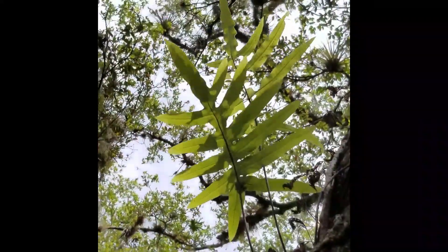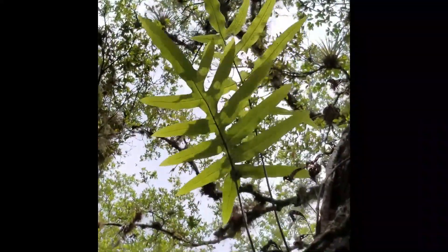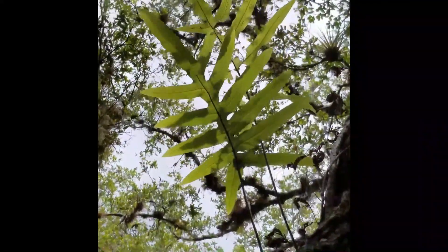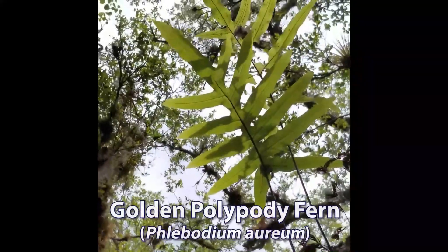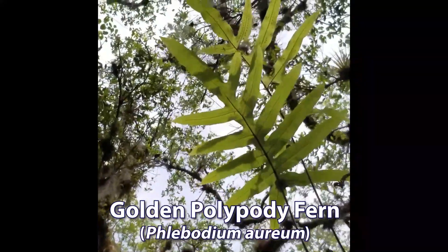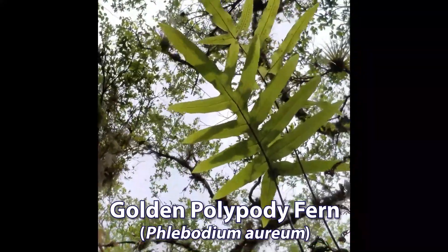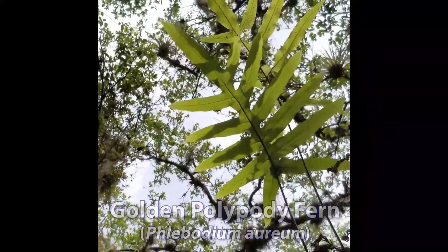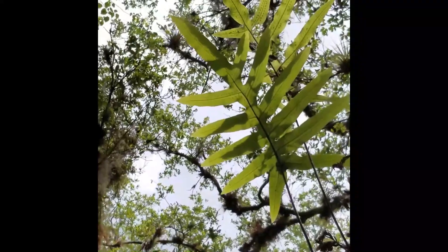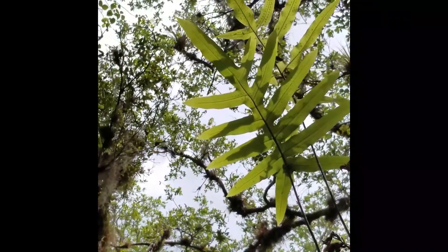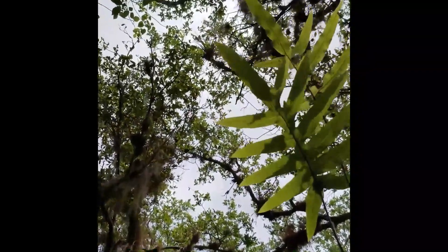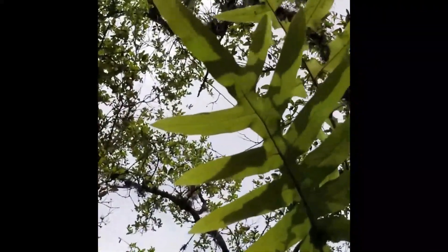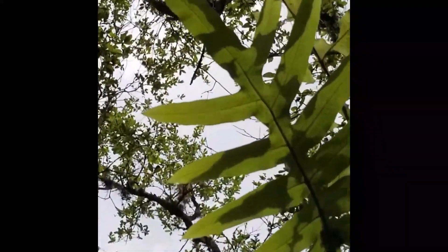Another member of the fern family here in Sweetwater Hammock is the golden polypody fern. You can see on the underside of its foliage small dots — those sorai, or spores, are what will be released to help the plant reproduce when it's time.